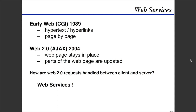Here we have the development of the web. In the early web, around 1989, we had hypertext and hyperlinks, and it was just page by page. Then in 2004 AJAX was developed — the web page stays in place and parts of the web page are updated. We're actually able to update different elements within the page itself rather than refreshing the whole page as one link.